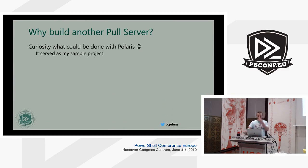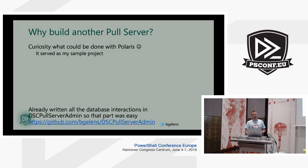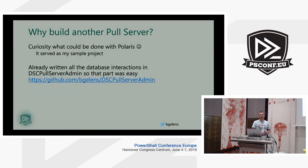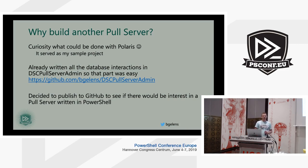Why build another pull server? Curiosity — I was just curious about what could be done with Polaris. Let's take a more advanced Hello World — I figured, let's do a pull server. It was my simple project for working with Polaris. I'd already written all the database interactions within the DSC Pulsar Admin, so that part was easy — no additional work to interface with the databases. I decided to publish it to GitHub to see if there was interest, and until now there hasn't been too much. It's not on the PowerShell gallery yet, but if people are interested, I'm happy to put it on there.